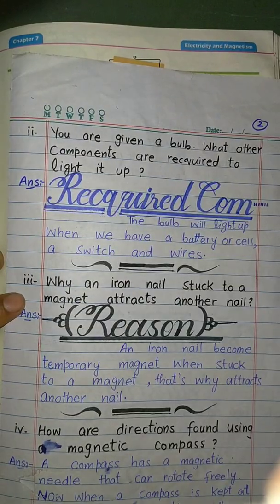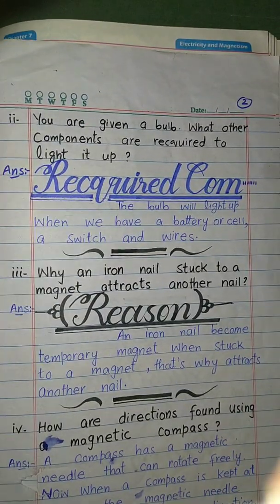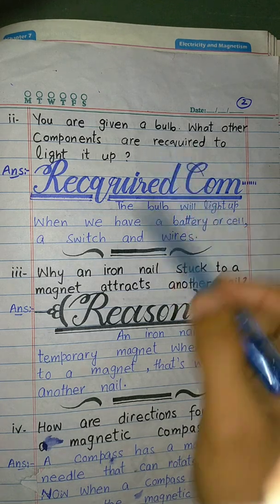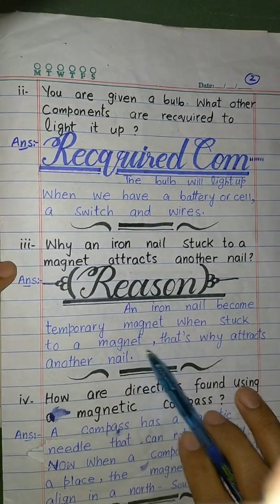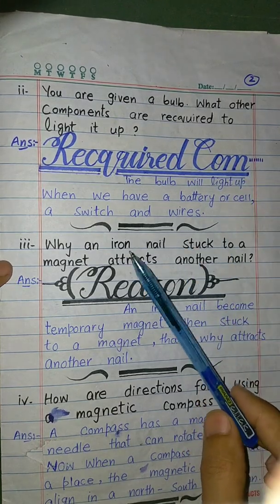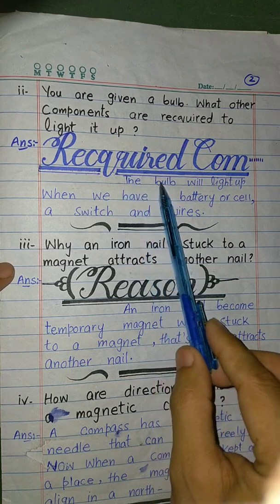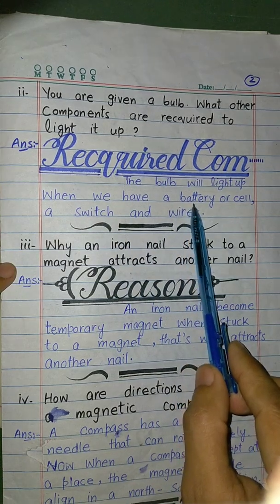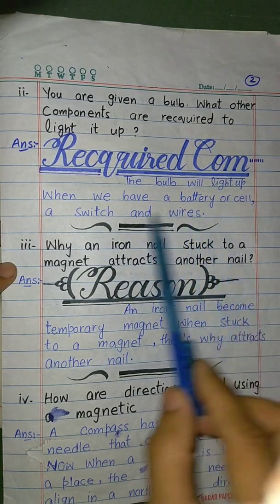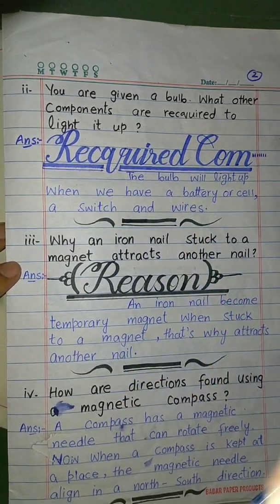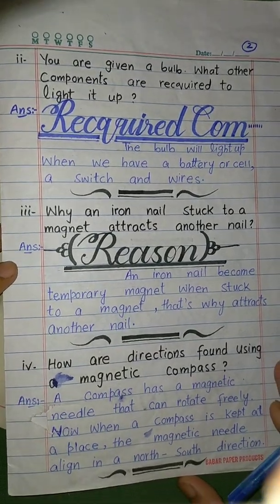Second question: you are given a bulb — what other components are required to light it up? Required components: a battery or cell, a switch, and wires. These components together with the bulb complete the circuit and allow the bulb to light up.